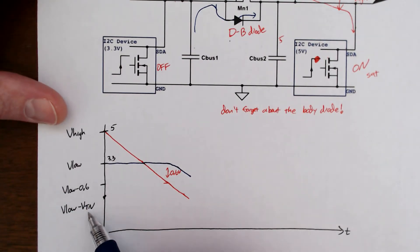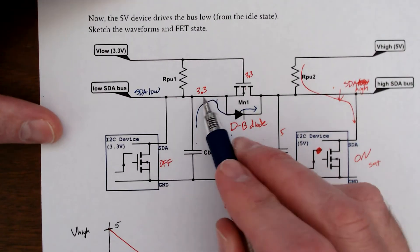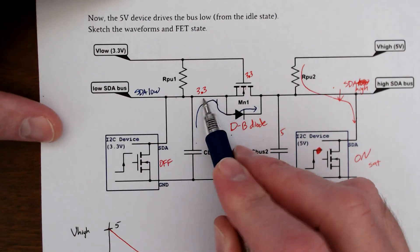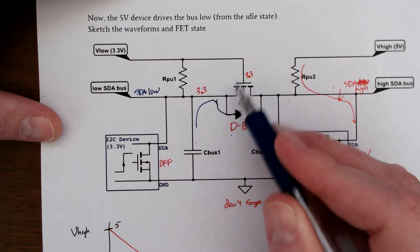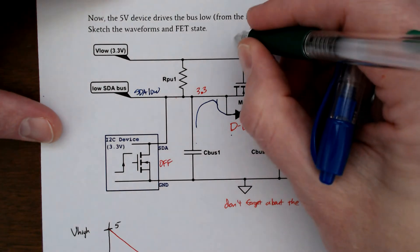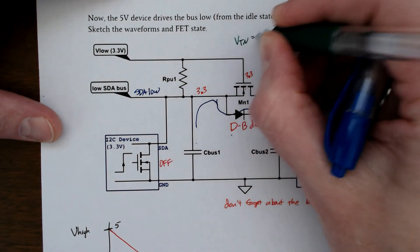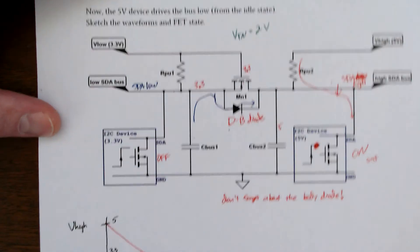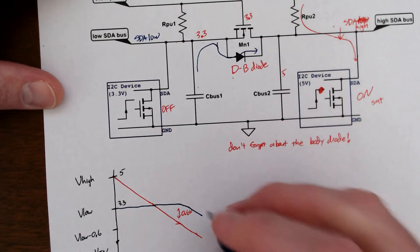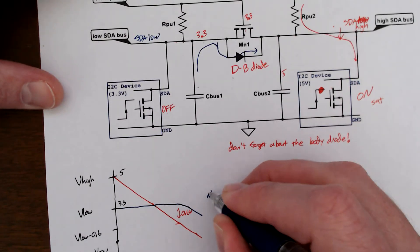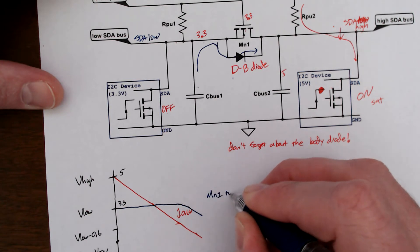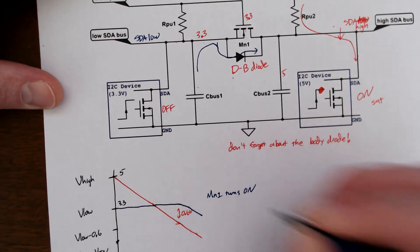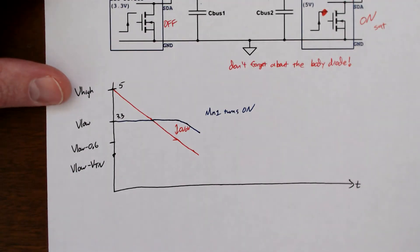we're going to reach this node. SDA low is going to be greater than, say, 2 volts. Remember I said V threshold is 2 volts for this. MOSFET is going to turn on. All right. So MN1 is going to turn on.